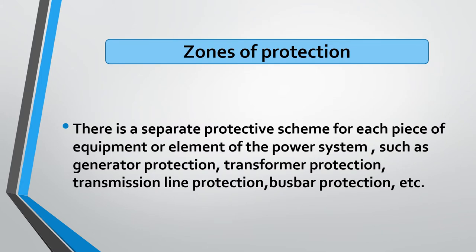There is a separate protective scheme for each piece of equipment or element of the power system. As you are familiar with the electrical power system — generators, transformers — all these elements need protection. That is why protection zones are defined: generator protection, transformer protection, transmission line protection, busbar protection, and so on.